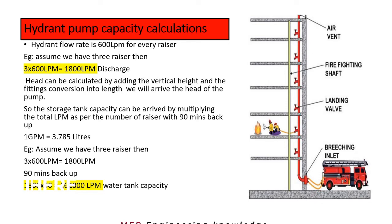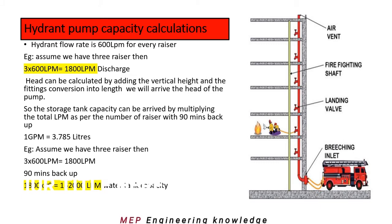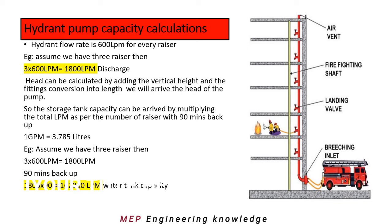Hydrant flow rate is 600 liters per minute for every riser. Assume we have three risers, then 3 into 600 LPM is 1800 LPM — that is the discharge, so the pump we have to select with 1800 LPM. Similarly, we need to find the head for the same pump. Head can be calculated by adding the vertical height and the fittings used in the pipeline.